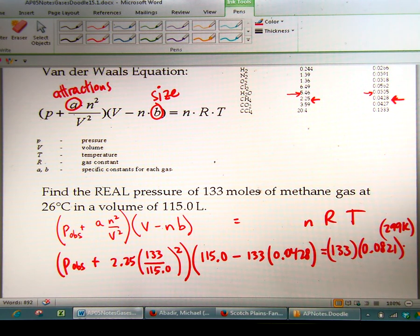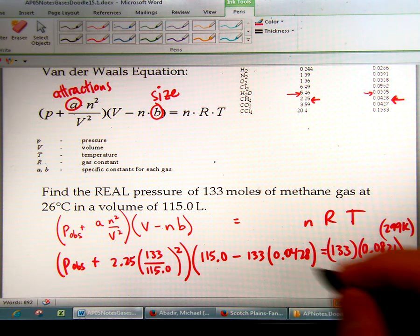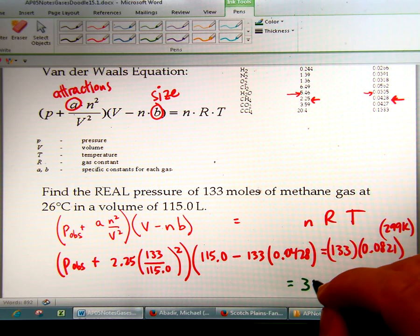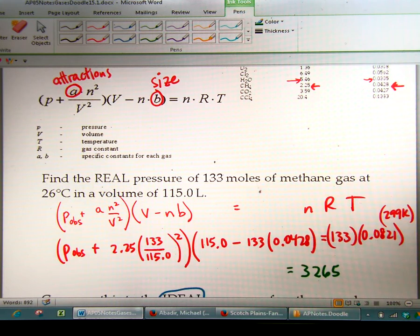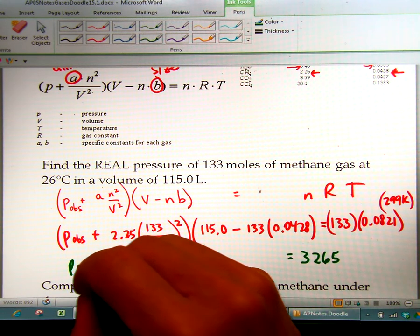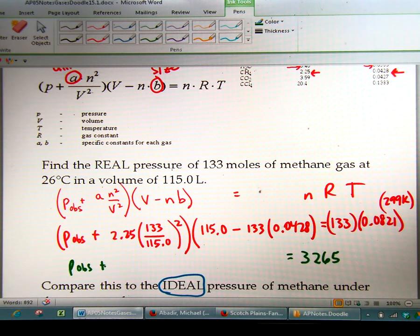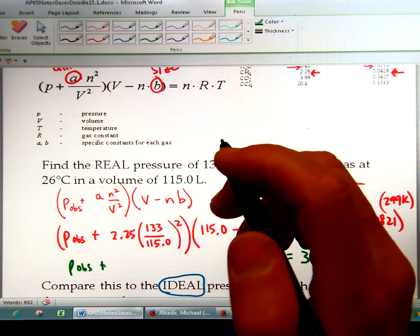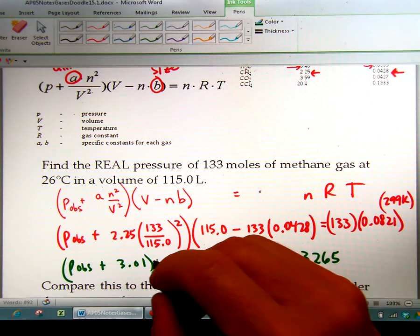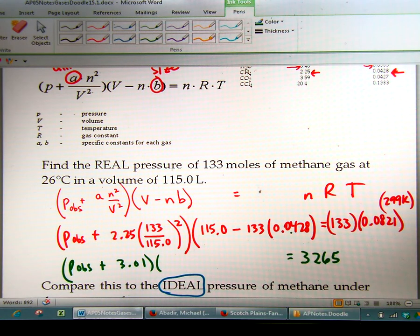Okay, so now this becomes a giant algebra problem. Part of the challenge is keeping all your numbers correct and in the right spot. So I'm going to do the whole right side first, 133 times 0.0821 times 299. That's going to equal 3265. Now on the left side, we're going to do P observed plus 133 divided by 115, and I'm going to square that, multiply by 2.25, that comes out to be 3.01. And then I'm going to take 133 times 0.0428, and I'm going to subtract that from 115, and I get 109.